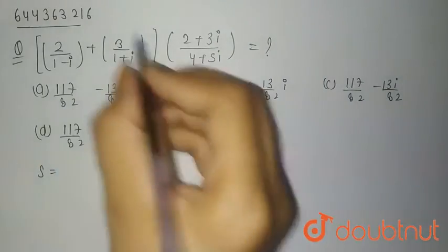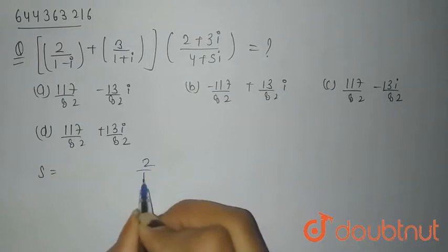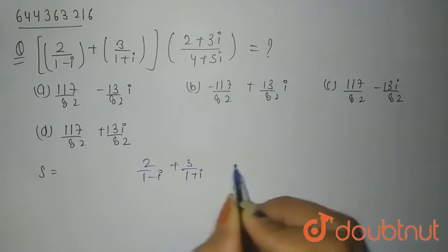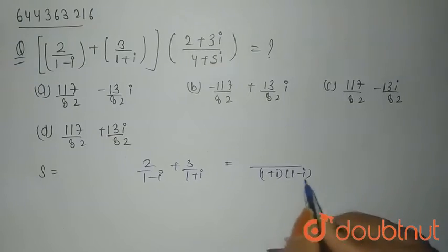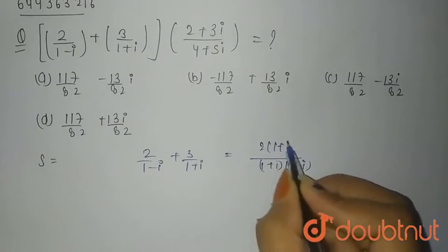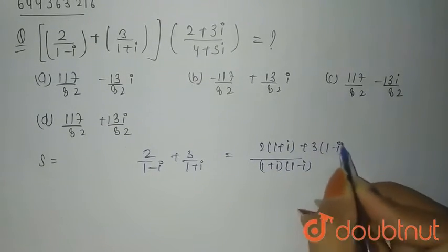So first of all, we have to solve this. That means 2 upon 1 minus iota plus 3 upon 1 plus iota. Taking LCM, you will have 1 plus iota into 1 minus iota. 2 into 1 plus iota plus 3 into 1 minus iota.